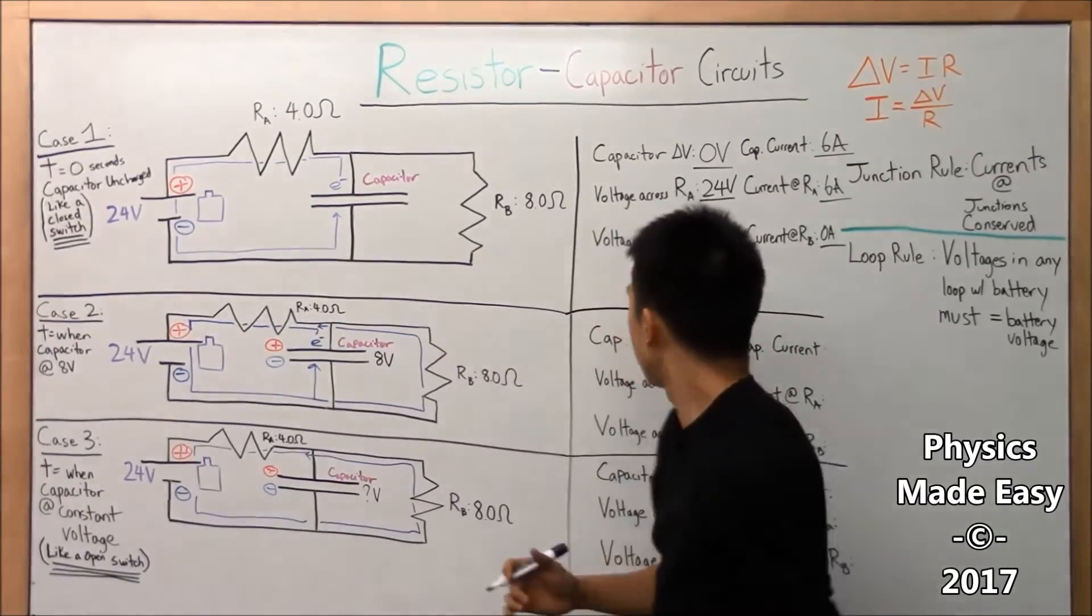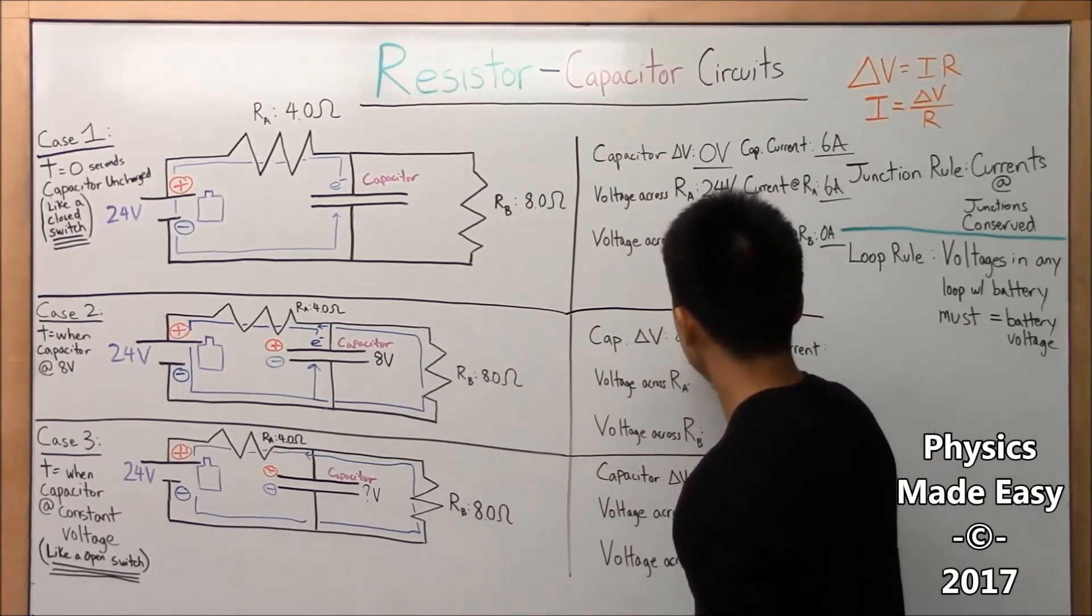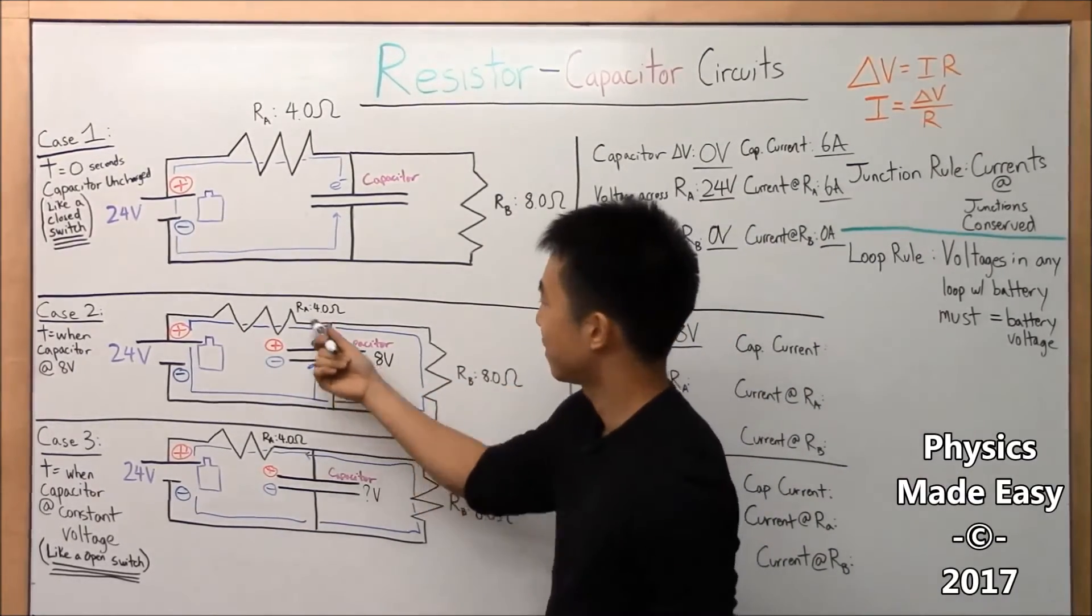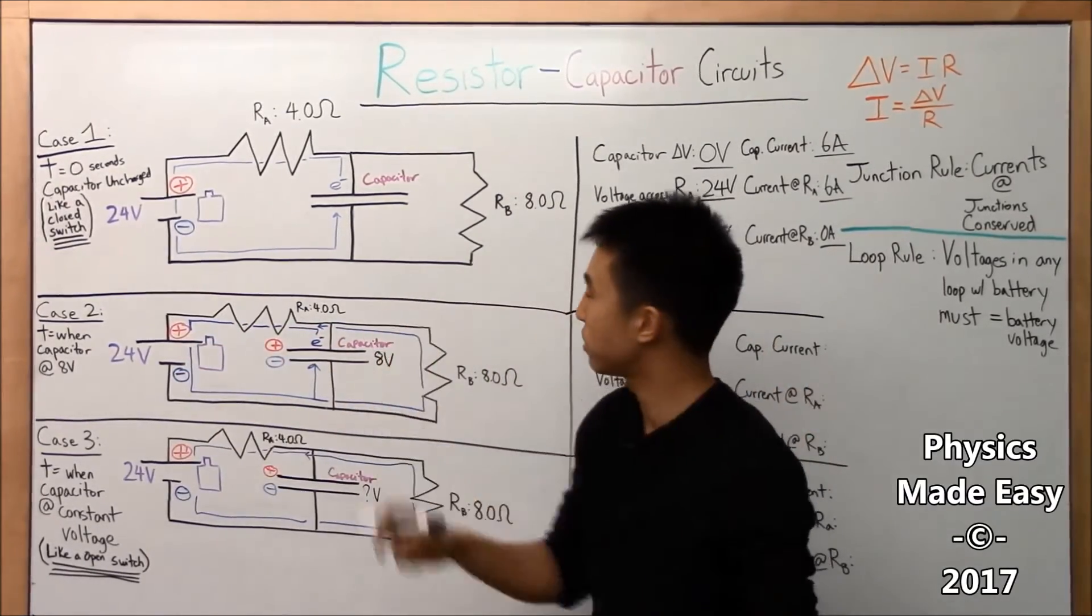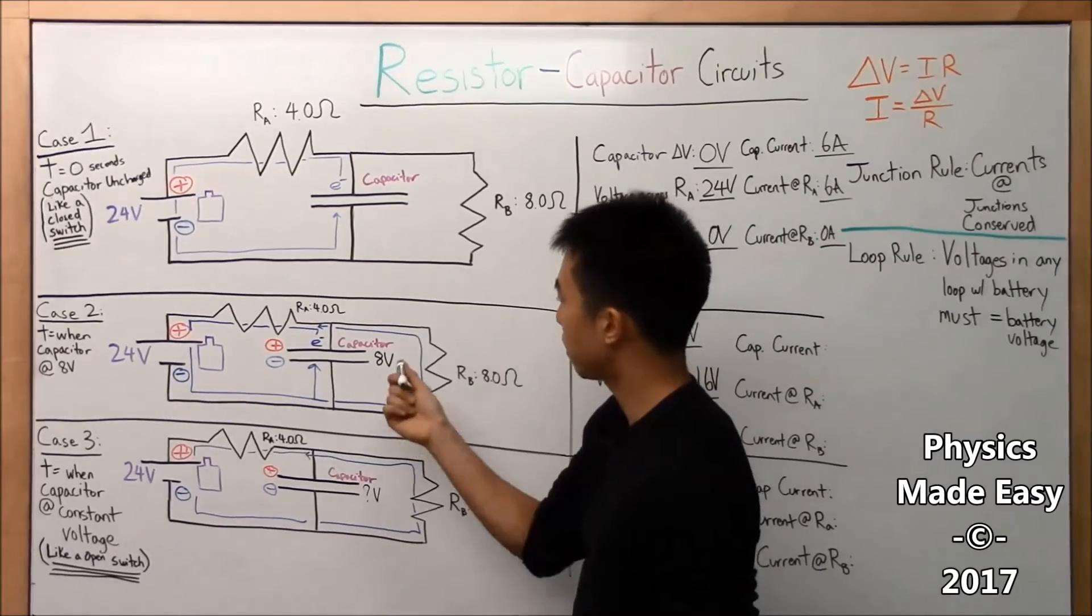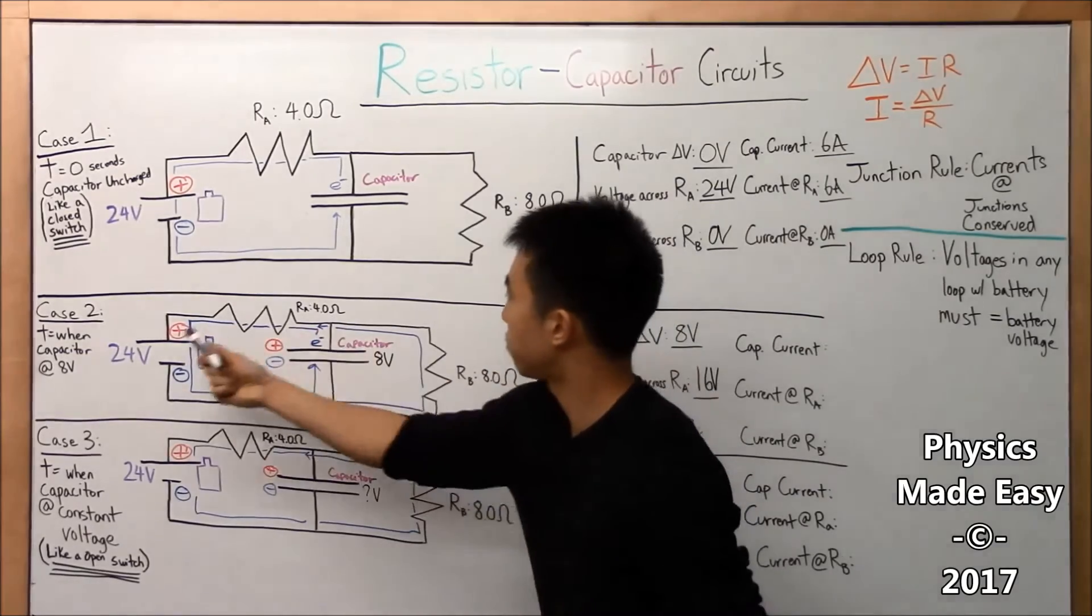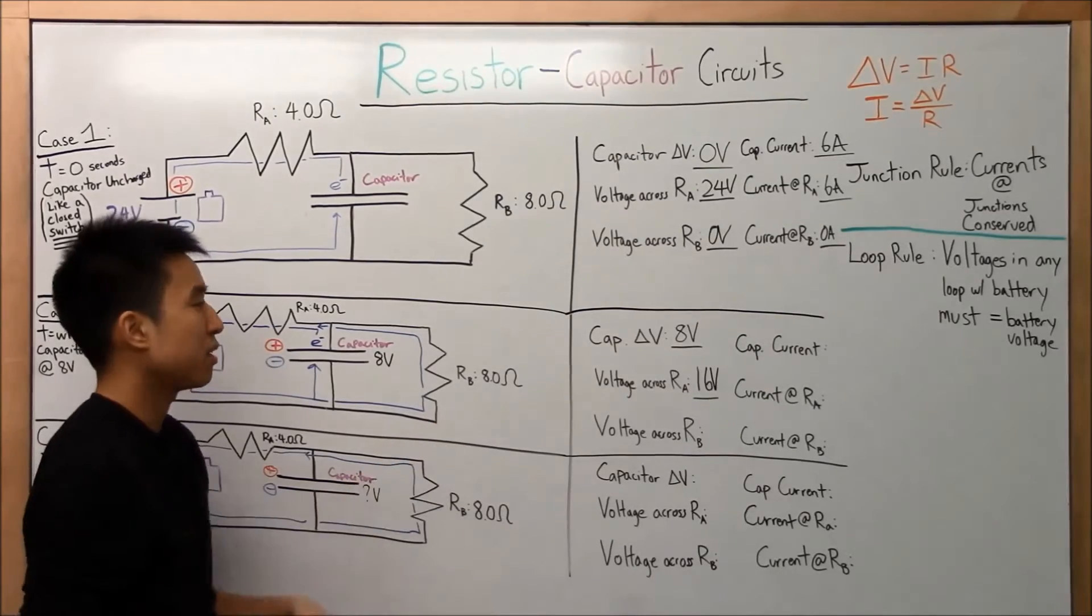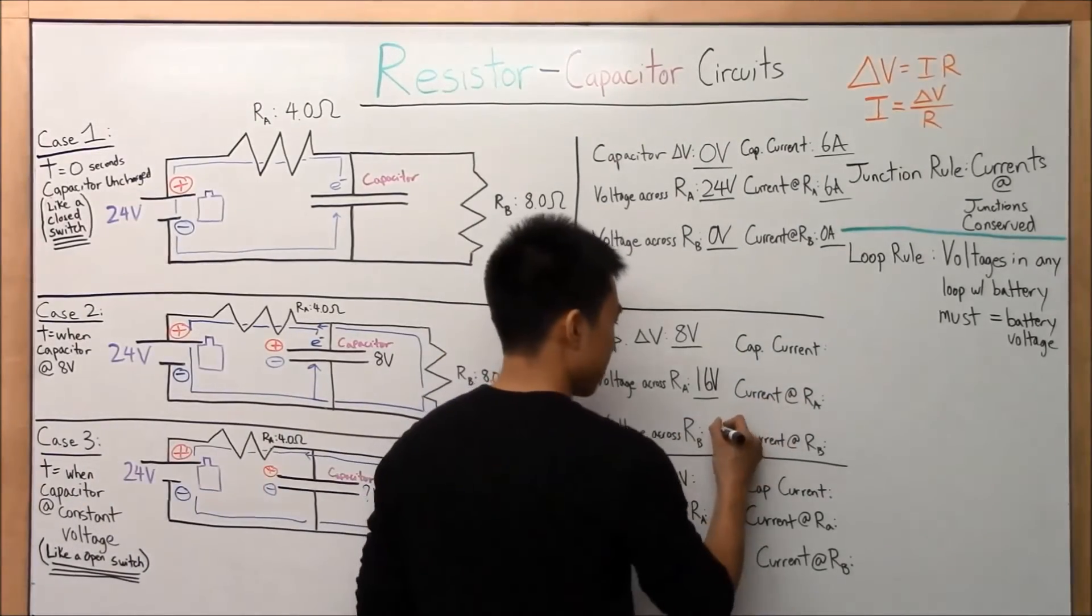Okay, so let's move on. Now in case 2, the capacitor is at 8 volts, so let's go ahead and put it in there. Voltage across A, alright loop rule, 24 volts to do the battery, this capacitor ate up 8 volts, so it must be 16 volts across A. Boom. Voltage across B, loop rule again, this is our loop now. So if we know A has 16 volts that we're eating up, B must have, it's 8 volts as well. Okay.